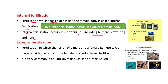External fertilization is when the fusion of male and female gametes takes place outside the body of the female. It is very common in aquatic animals such as fish, starfish, and amphibians. Amphibians, like frogs, live both in water and on land. The key difference is: internal fertilization takes place inside the female body, while external fertilization takes place outside the body of the female.